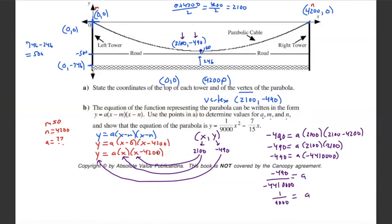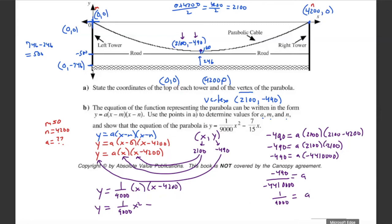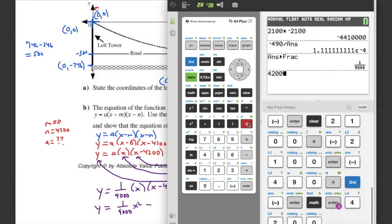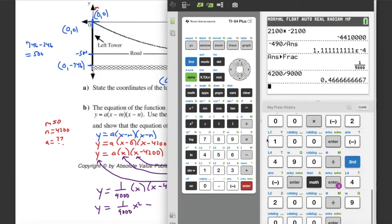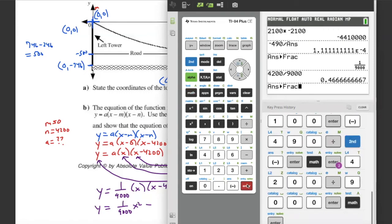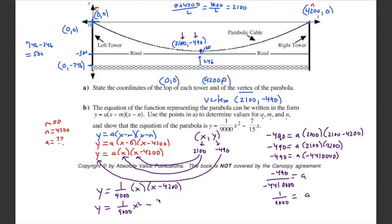Now that we have a = 1/9000, m = 0, and n = 4200, the equation is y = (1/9000) · x · (x − 4200). Expanding this, x times x is x squared, and then 4200/9000 simplifies to 7/15. So the equation becomes y = (1/9000)x² − (7/15)x, which matches the target equation.